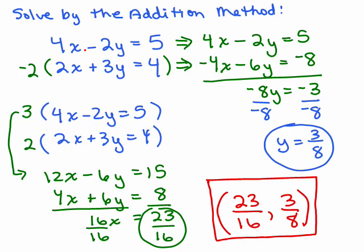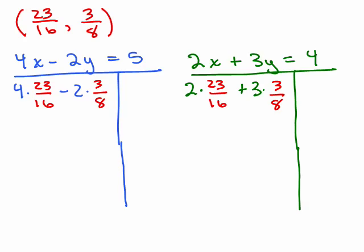But it'll work if you would have just plugged in 3 eighths for y into either of the original two equations and solved for x. You would have gotten 23 sixteenths that way as well. Now when it comes to checking, you're stuck. You're going to have to deal with fractions by just making sure when you plug in those values for x and y, you do get a true equation.